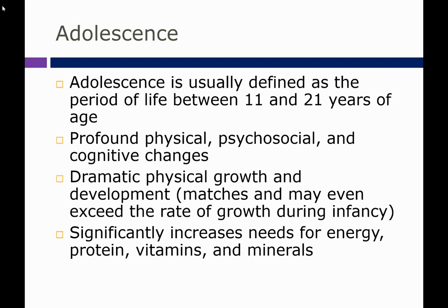We will begin with objective 14.1. Adolescence is usually defined as the period of life between 11 and 21 years of age. In previous lectures we defined other stages of the life cycle by age. During adolescence we see profound physical, psychosocial, and cognitive changes occurring, and all of these variables influence the eating behaviors and patterns of adolescents. Additionally, we see dramatic physical growth and development occur during this time.